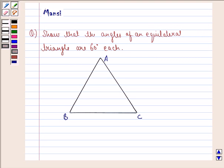Hello and welcome to the session. My name is Mansi and I am going to help you with the following question. The question says, show that the angles of an equilateral triangle are 60 degrees each. Let us start with the solution to this question.